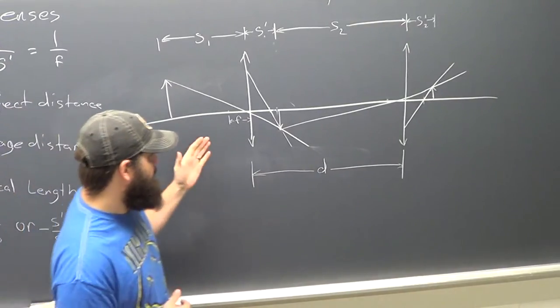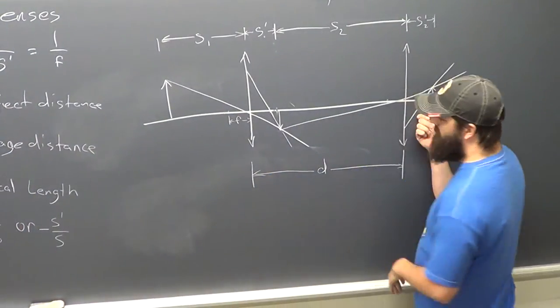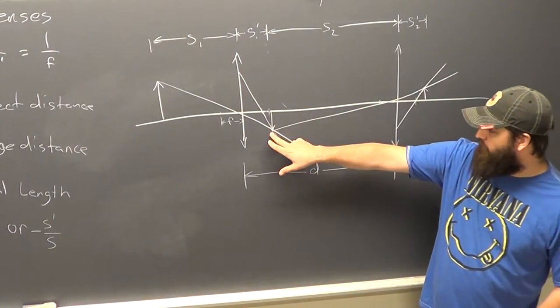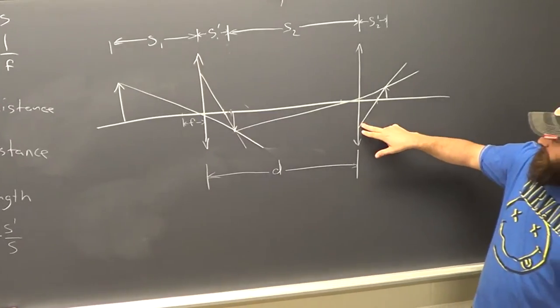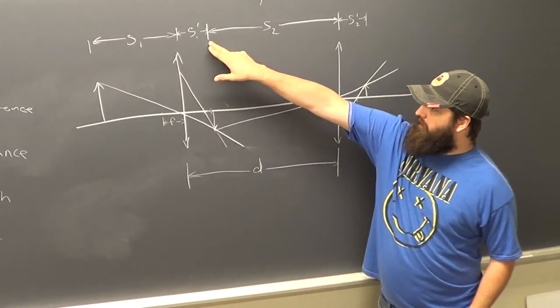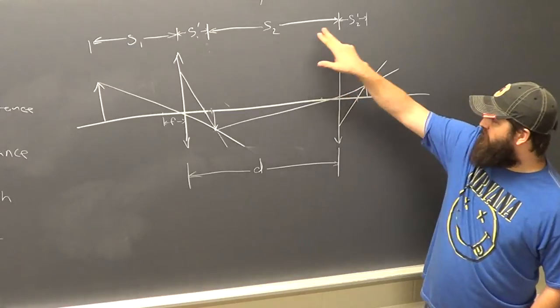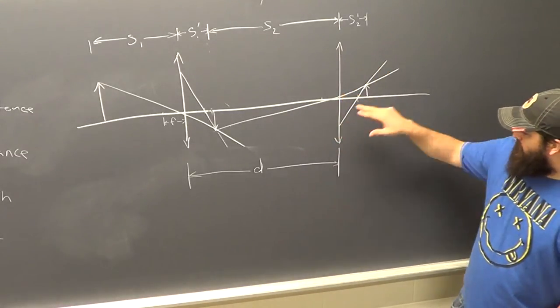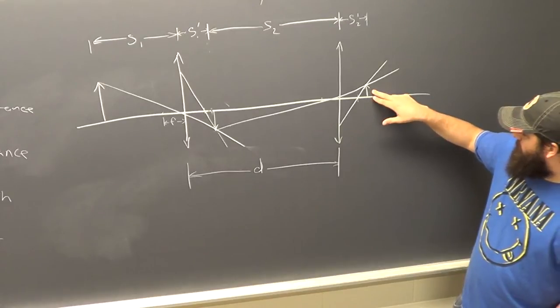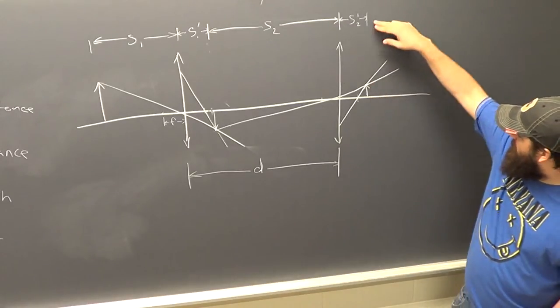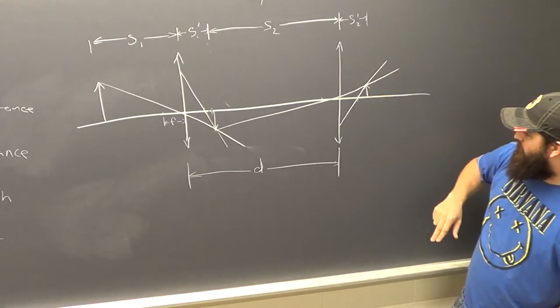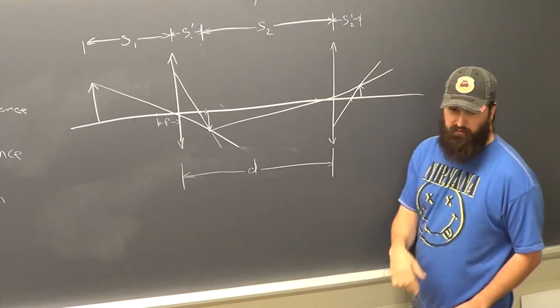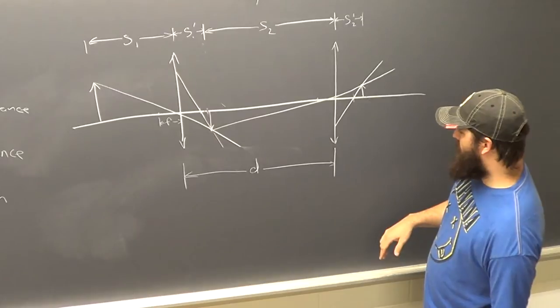When we put the second lens into the system, the image from the first lens will act as the object from the second lens. That image is a distance S2 from the second lens and then just like before, it will create an image through the second lens at a distance S2 prime from the second lens. This is where your screen will be on the physical apparatus.